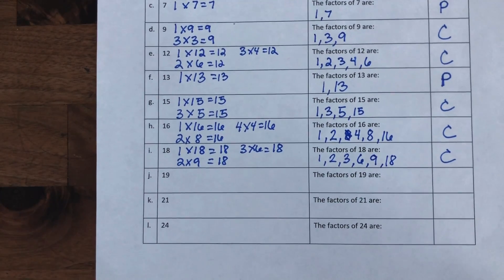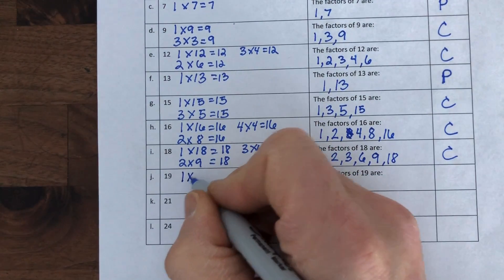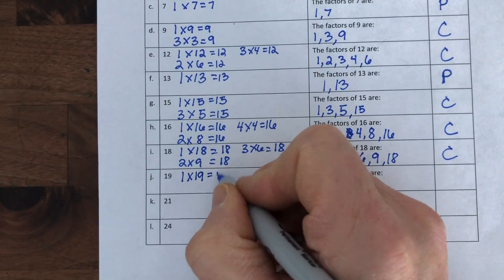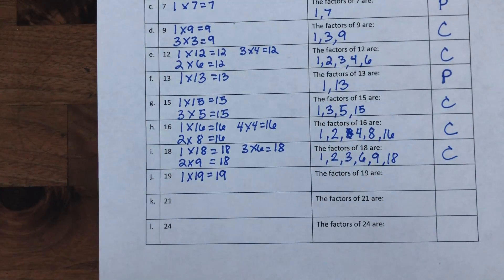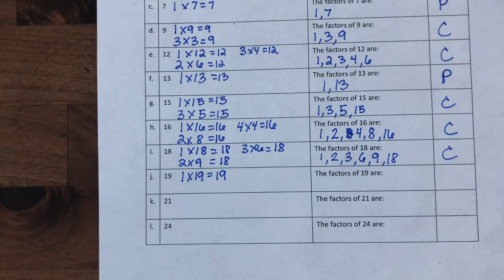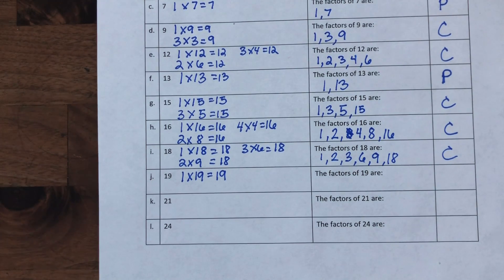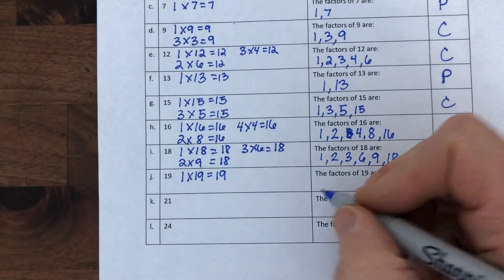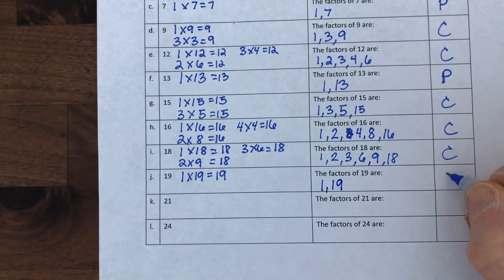Moving on — number 19. One times 19 equals 19. I taught third grade for a long time and I never ended up on 19 in any multiplication fact unless it was one times 19. It's not two, three skips over it from 18 to 21, four is even, and counting by fives always ends in five or zero. So one and 19 are the only factors — making it a prime number.